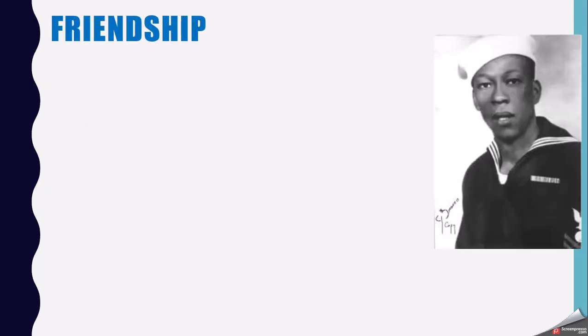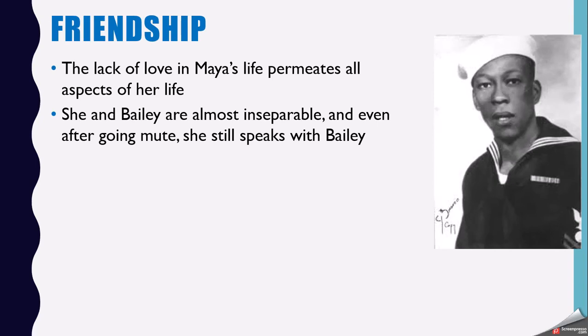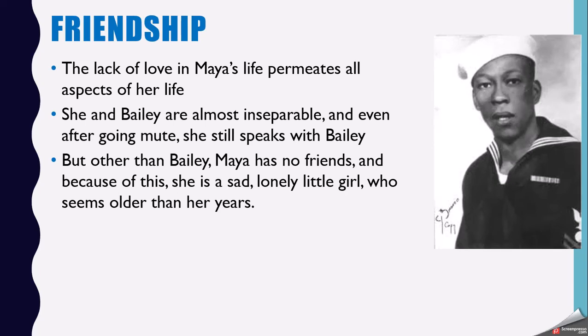Friendship. The lack of love in Maya's life from her parental figures really permeates through all aspects of her life. She and Bailey are almost inseparable. Even after going mute, she still talks to him and they are best friends. They're close in age, and it's not unusual for siblings who are close in age and who have experienced the same trauma to cling to each other. But other than Bailey, she really has no friends. Because of this, she's a sad, lonely little girl who seems quite older than her years, particularly after the assault.